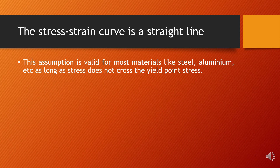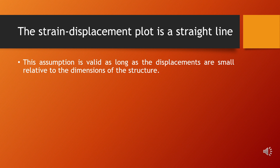The next assumption is that the stress-strain curve is a straight line. This is usually valid as long as we are within the limits of linearity. The next assumption is that the strain-displacement relationship is also a straight line — meaning the strain is proportional to displacement. This is true as long as the geometric non-linear effects are negligible.